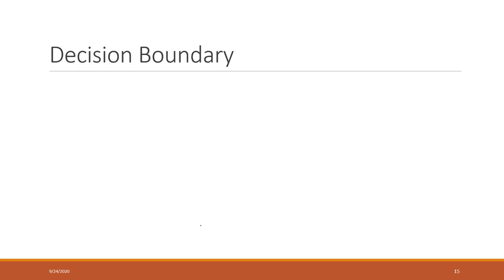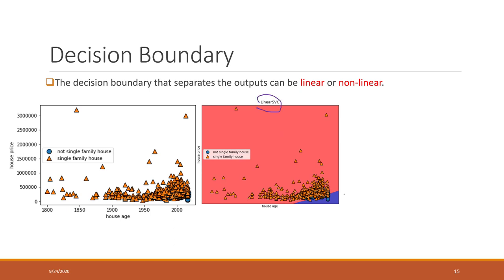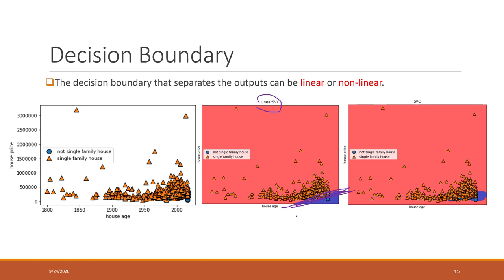Now let's look at the decision boundaries. If we are using a linear SVM, the decision boundary will still be linear — similar to logistic regression. But if we apply a kernel trick and use a kernel function, which is what we do in a normal SVM, the decision boundary will no longer be linear. In that case, the accuracy on the training data will be higher, and the complexity of the model will also be higher.